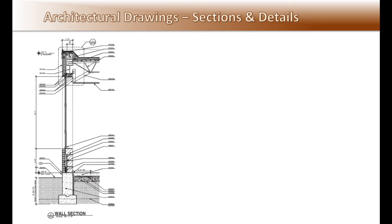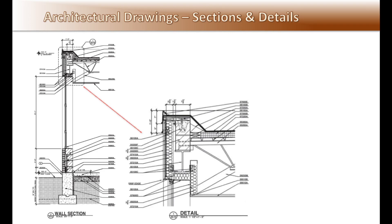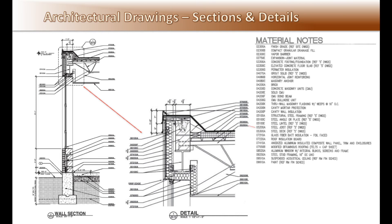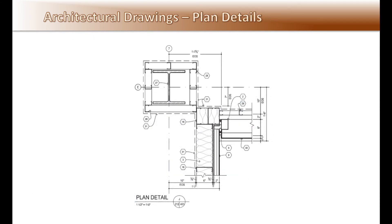Here in this section, the architect is showing the entire building wall using a scale of three-quarters of an inch equals a foot, and a detailed blow-up at the top using a scale of one and a half inches equals a foot, showing additional detail of the parapet wall and roof construction. Also note, this architect uses a notes system referenced to CSI specification numbers to a legend so that the contractor can easily look up material information. Details can also be used in plan views, as shown here at the intersection of the structural building column showing the stud framing and finish materials.